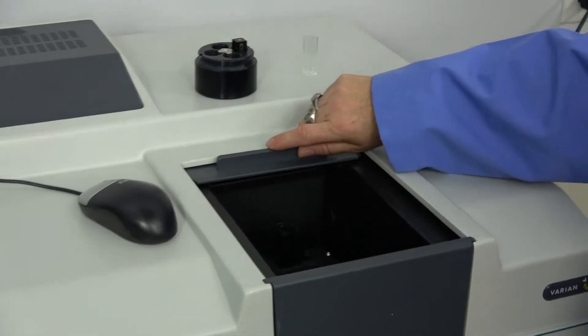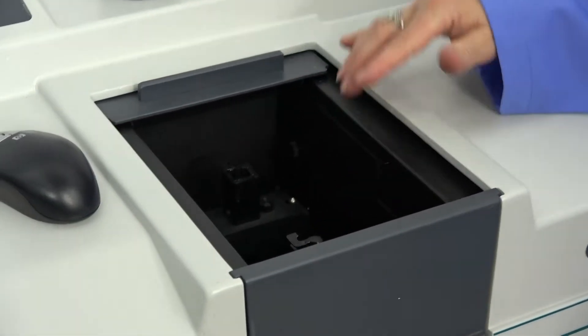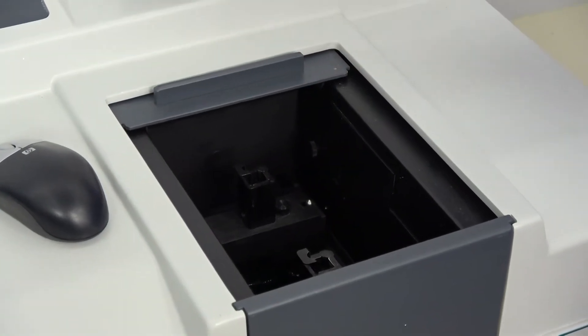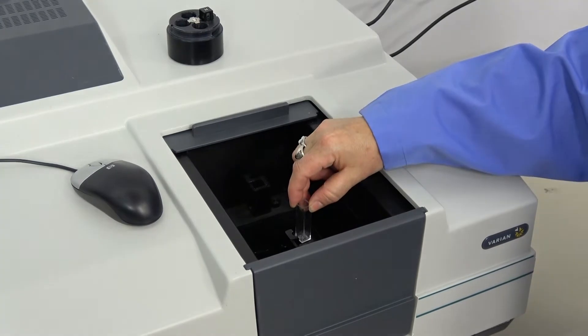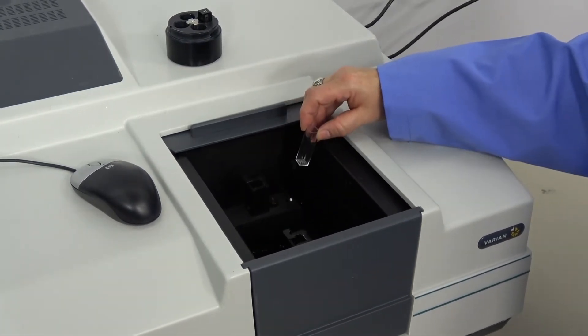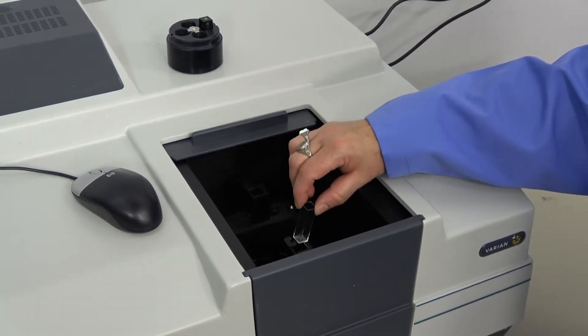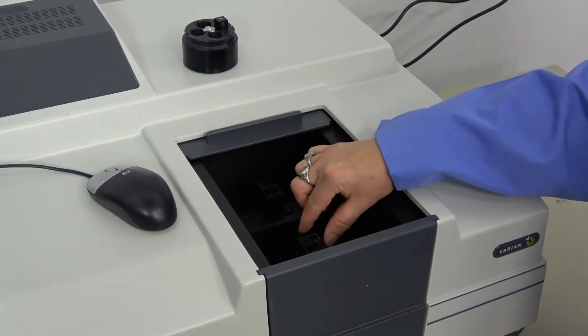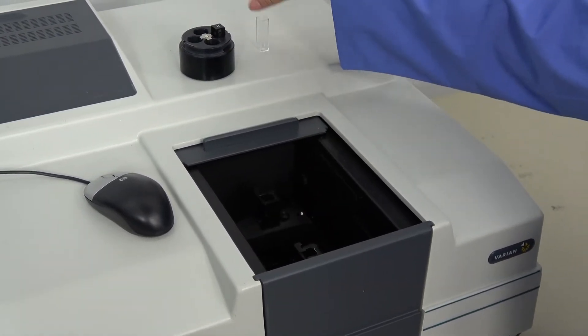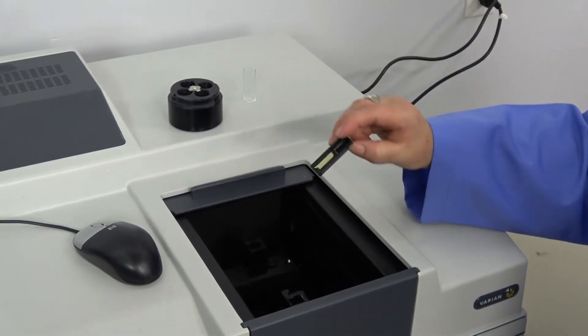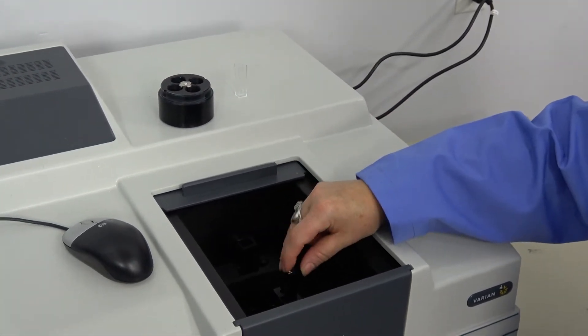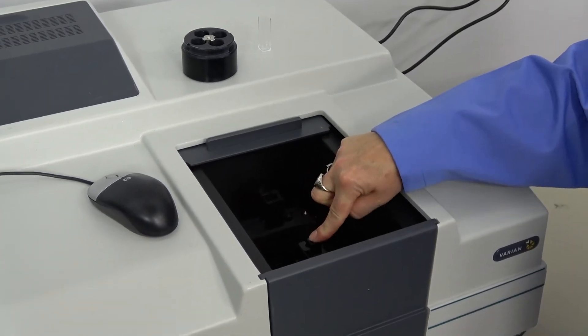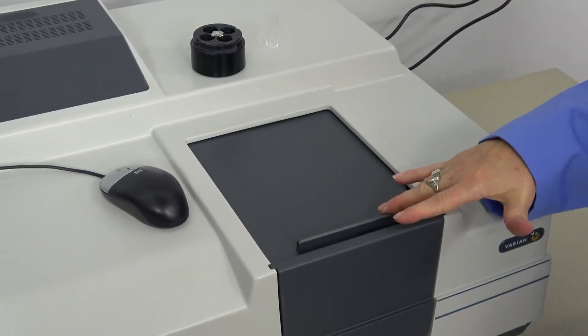The samples load into here. There is a place to put the cuvettes, either plastic or glass, in the front or the back. You can run this as a dual beam instrument. Today we are only going to be using it as a single beam with the front. So we'll take our known sample and we're going to slide that in this way so that the light will pass through it. We'll close the door.